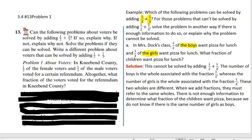Section 3.4, homework problem number 13 and problem 1. So let's look at the example. Which problems can be solved by adding one half and one third? One of the things we learned in this section is whenever we add fractions, we must make sure these fractions are out of the same hole.